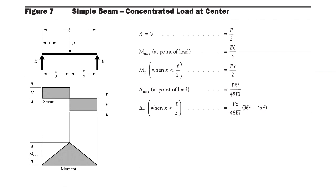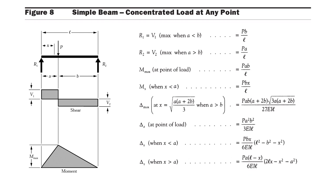Next condition: a simply supported beam carries a concentrated load at any point, as shown in figure 8. The load is placed at a distance 'a' from R1 and distance 'b' from R2. The maximum bending moment is pab/l and the maximum deflection is pa²b²/3EIl. The reactions are R1 = pb/l and R2 = pa/l. The maximum bending moment occurs directly under the point load.